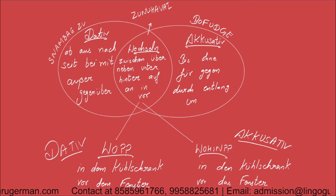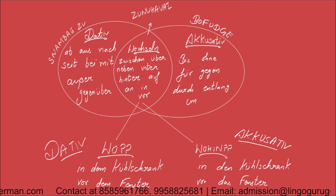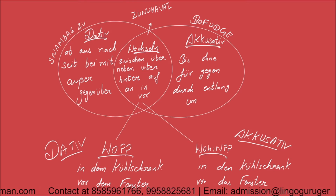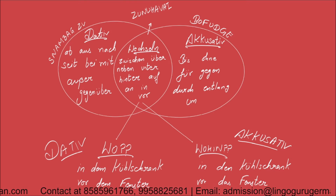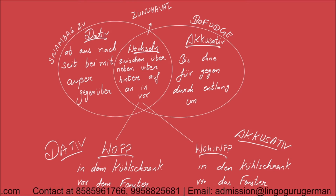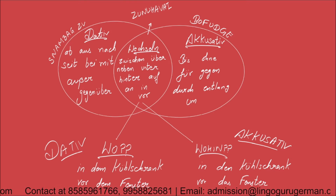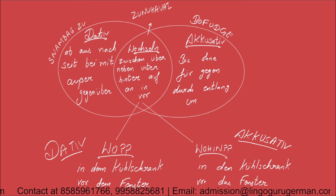On the right side we have the accusative prepositions. There are seven accusative prepositions: bis, ohne, für, gegen, durch, entlang, um. We will see examples of all these prepositions today.